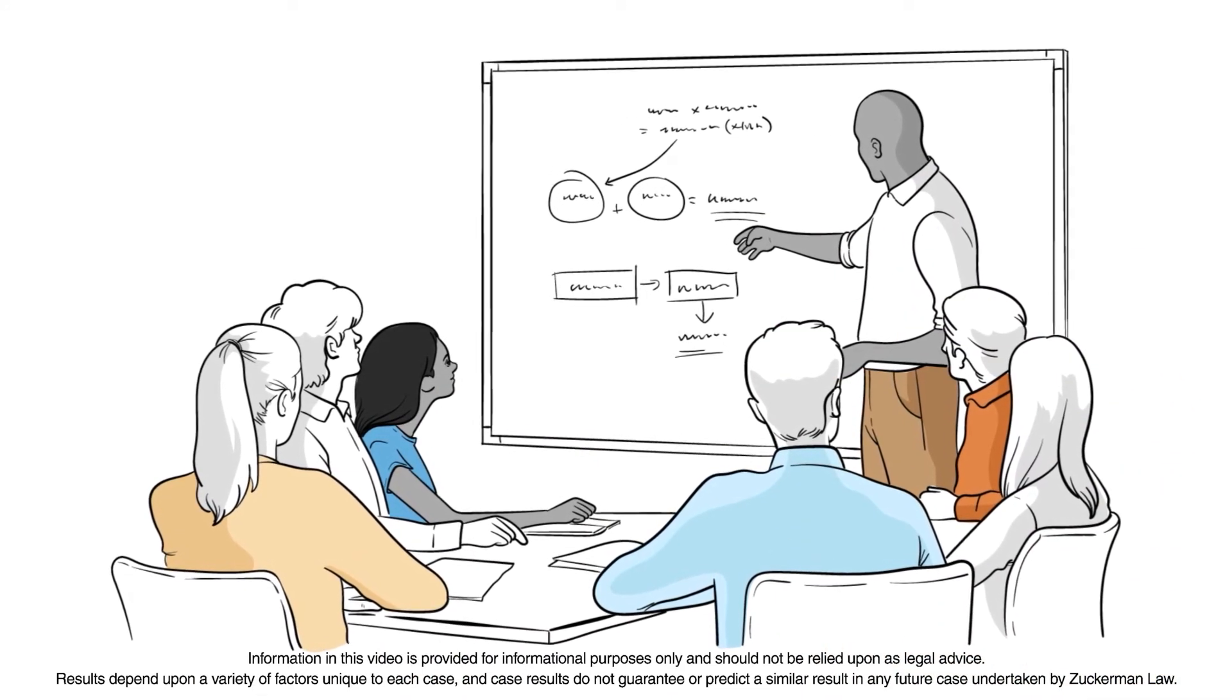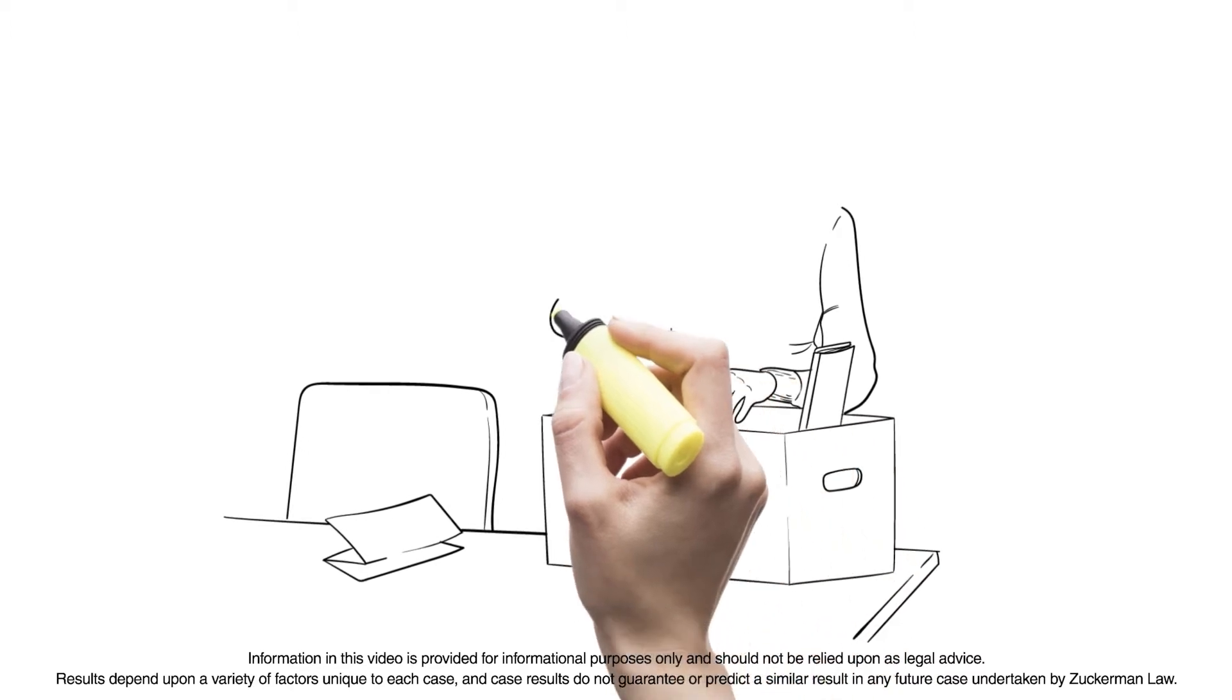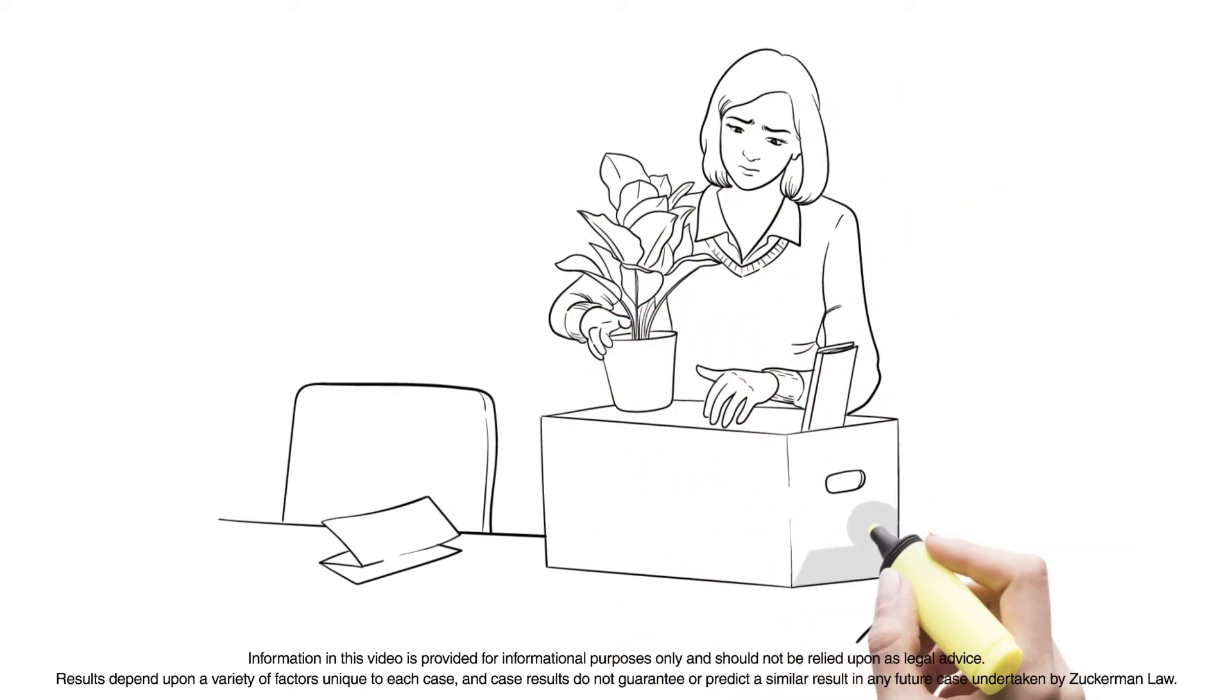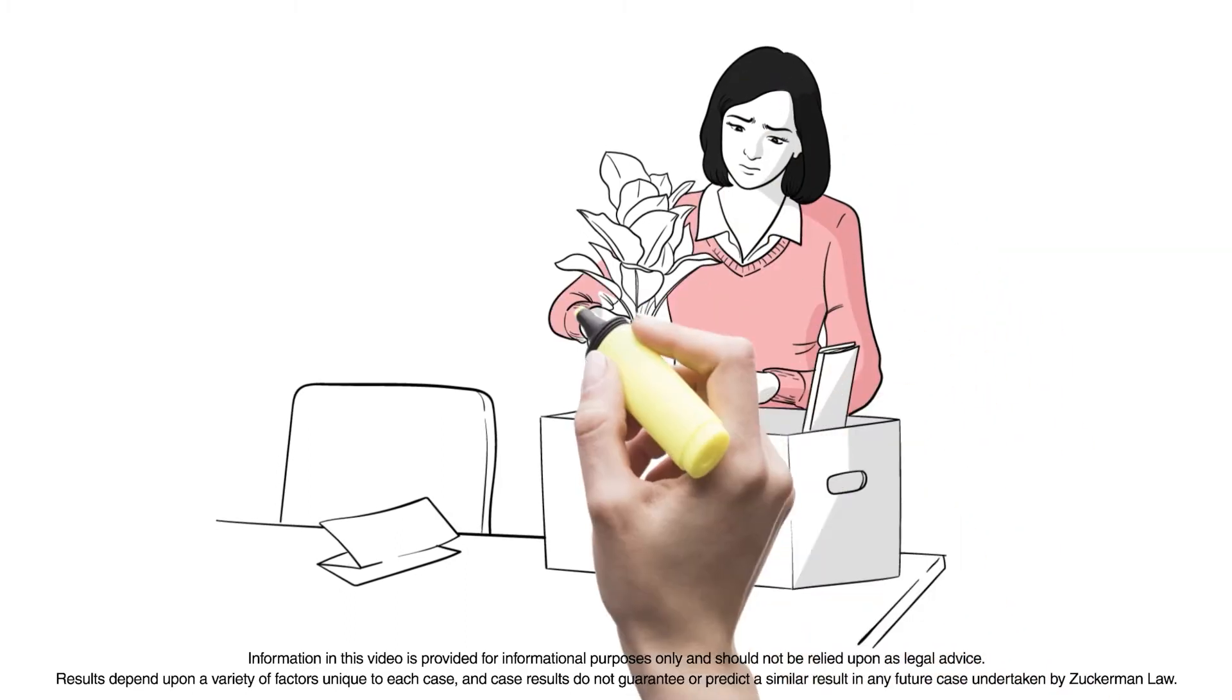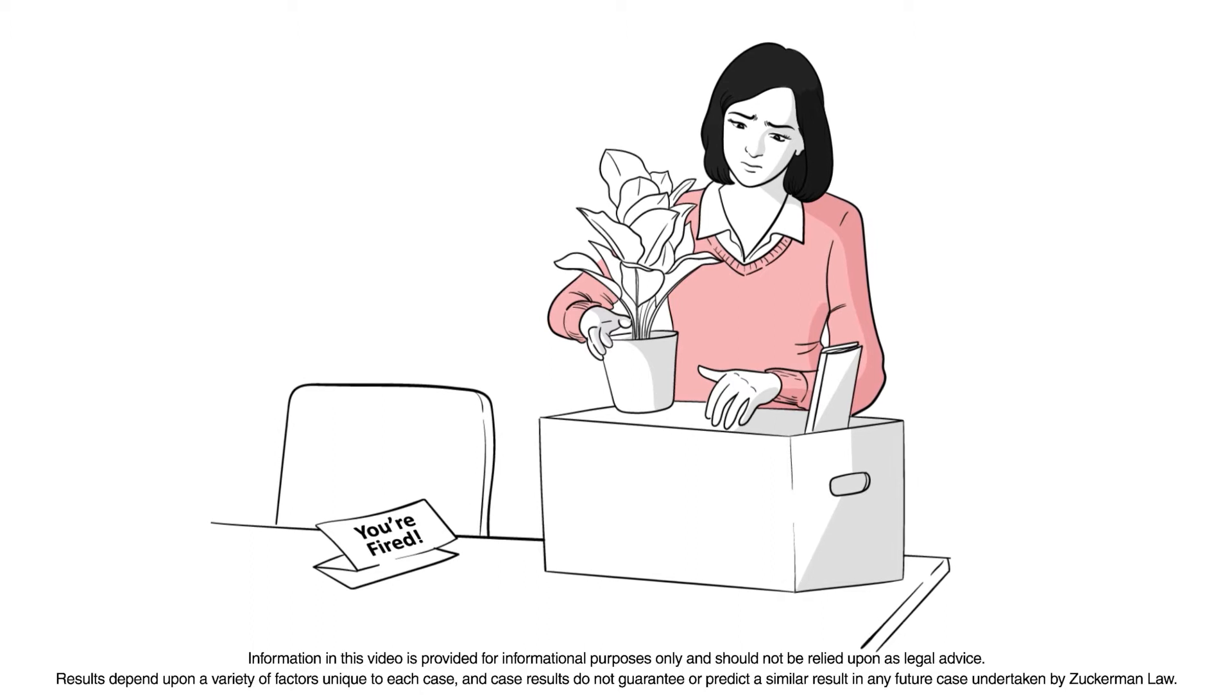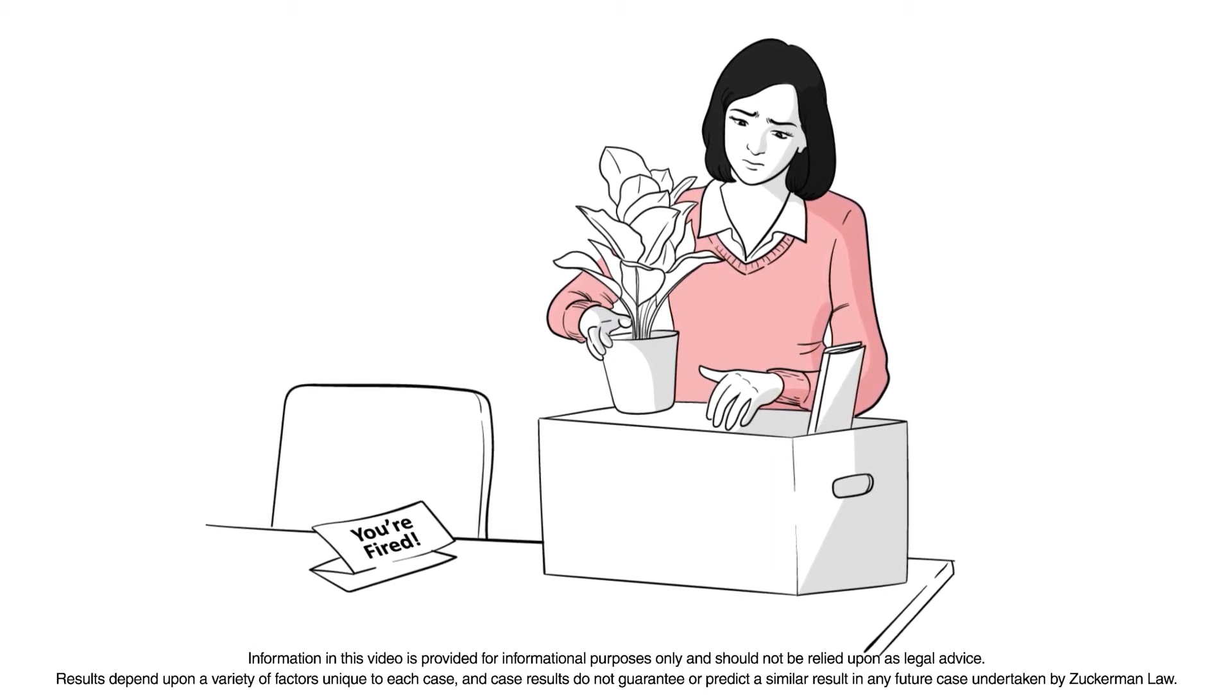The whistleblower protection provision of the Sarbanes-Oxley Act prohibits employers from retaliating against whistleblowers for reporting to a supervisor, law enforcement, regulatory authorities, or Congress mail fraud, wire fraud, bank fraud, securities fraud, a violation of any rule or regulation of the SEC, or any provision of federal law relating to fraud against shareholders.